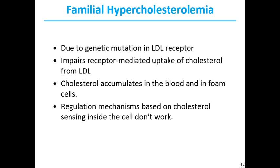Familial hypercholesterolemia is a genetic disorder in which blood cholesterol levels are extremely high and severe atherosclerosis develops in childhood. Individuals with this disorder have a defective LDL receptor and lack receptor-mediated uptake of cholesterol carried by LDL. Consequently, cholesterol is not cleared from the blood, it accumulates in foam cells and contributes to atherosclerotic plaque formation, and regulation mechanisms based on intracellular cholesterol sensing do not work for these individuals.